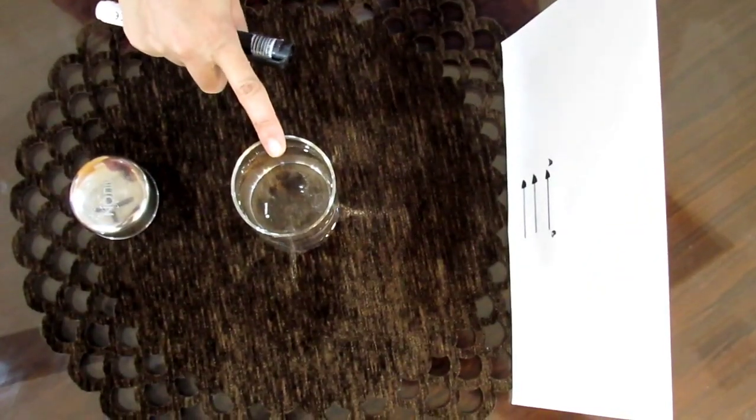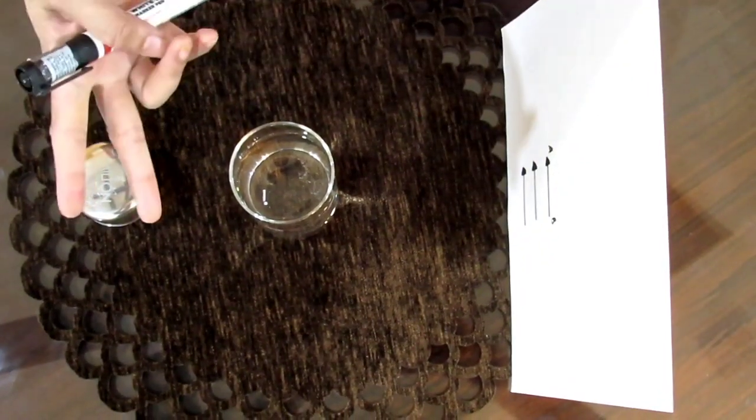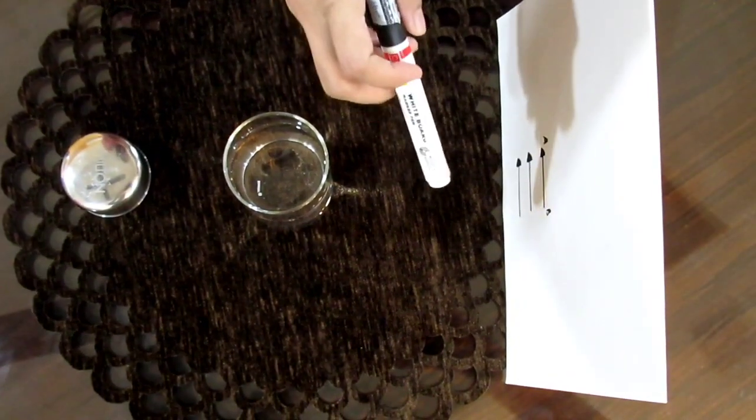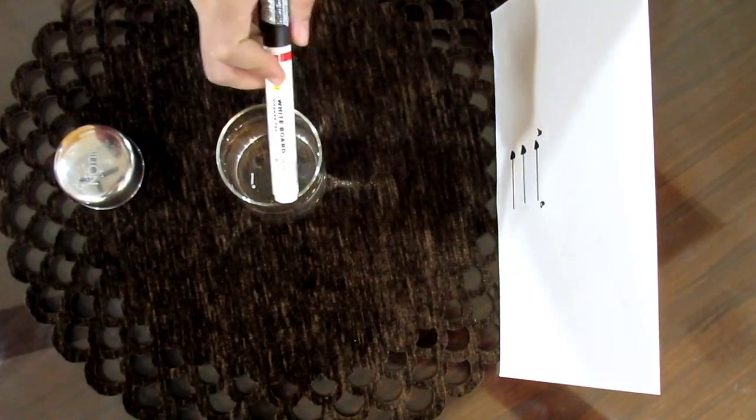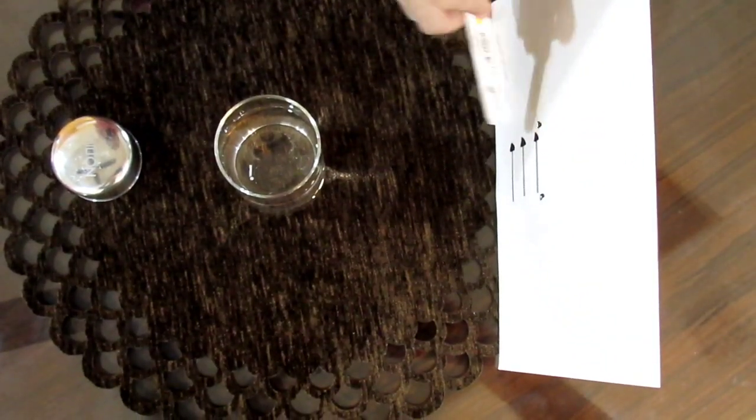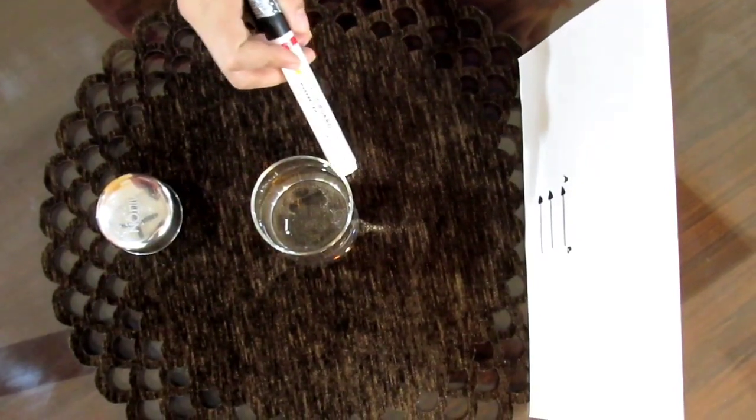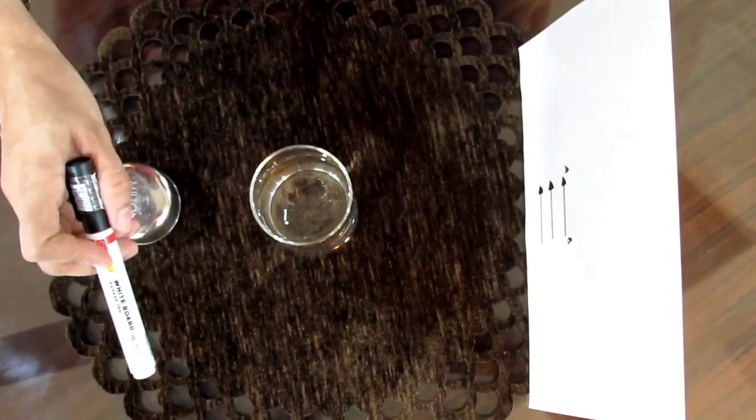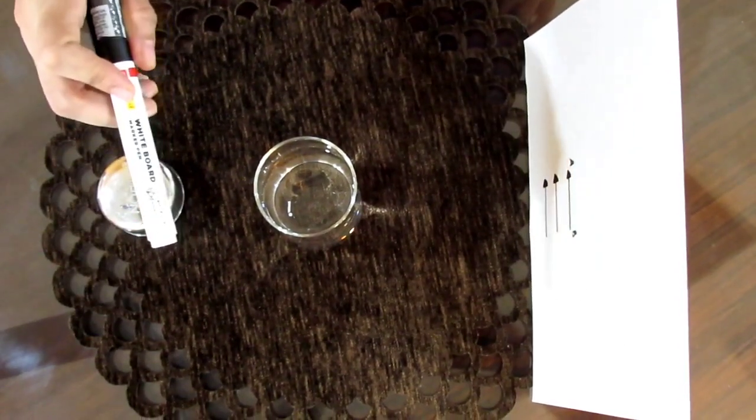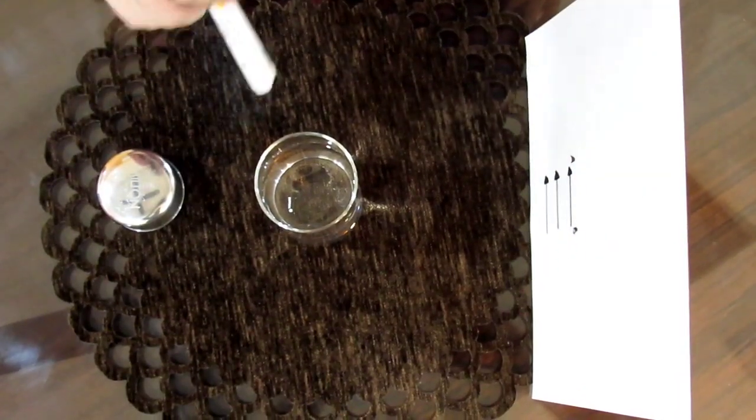But when you add water into the glass, the arrows get flipped. This is because water bends the path of light. When light goes through the glass with water, it bends and goes in a different direction. That is why you see the image reversed.